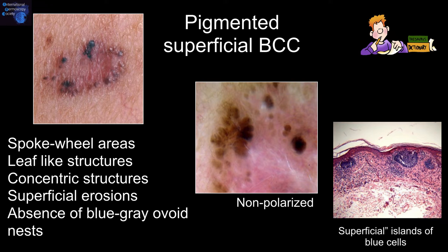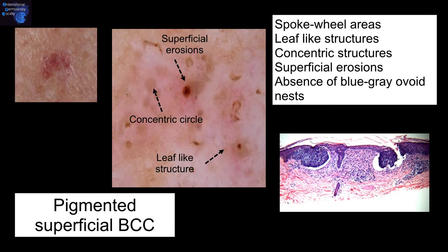Pigmented superficial basal cell carcinomas — the features we look for include spoke wheel areas, leaf-like structures, concentric structures, superficial erosions, and the absence of a blue-gray ovoid nest. Here we have a pigmented superficial basal cell carcinoma showing the concentric circle, a leaf-like structure, and a superficial erosion.